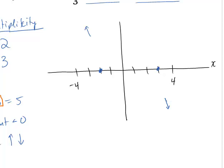Now I have a zero at negative 2 with multiplicity 2. When you have an even multiplicity on a zero, the curve does not pass through that x-intercept but rather touches and bounces off. So my curve would start from the top and bounce off.